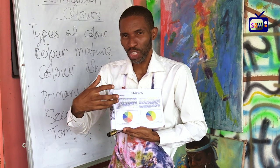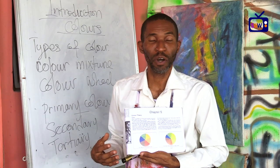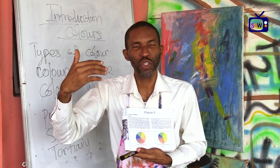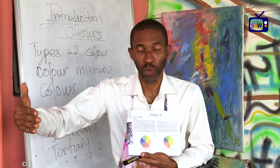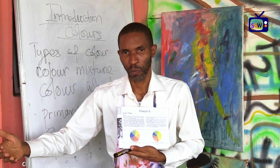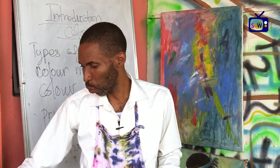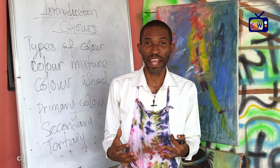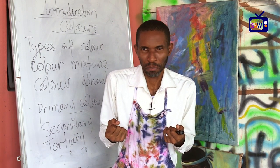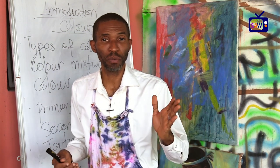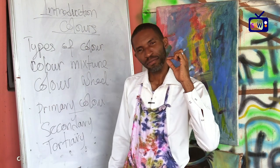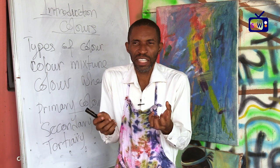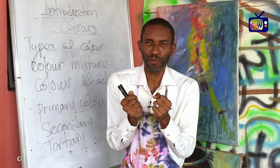Colors that are opposite each other on the color wheel are called complementary colors. We also have the neutral colors — black and white. They are called neutral because we use them as a tint to lighten a color or to create a shade of other colors. Then we have warm colors: yellow, orange, and red — they're called warm because they produce heat. Cool colors include blue, green, and purple; they make you feel relaxed.